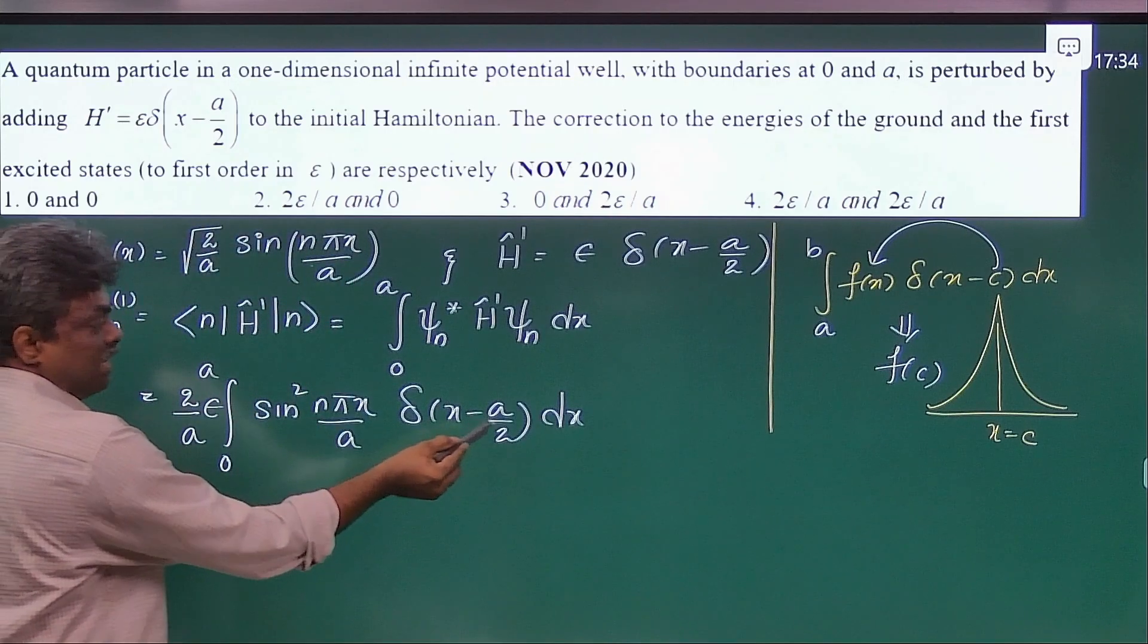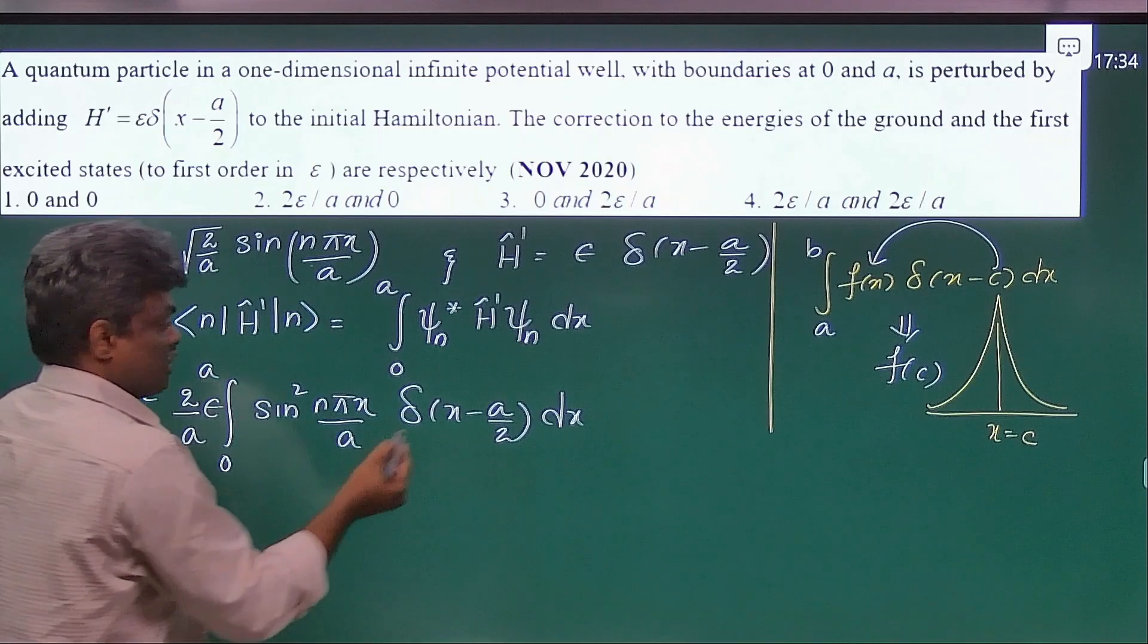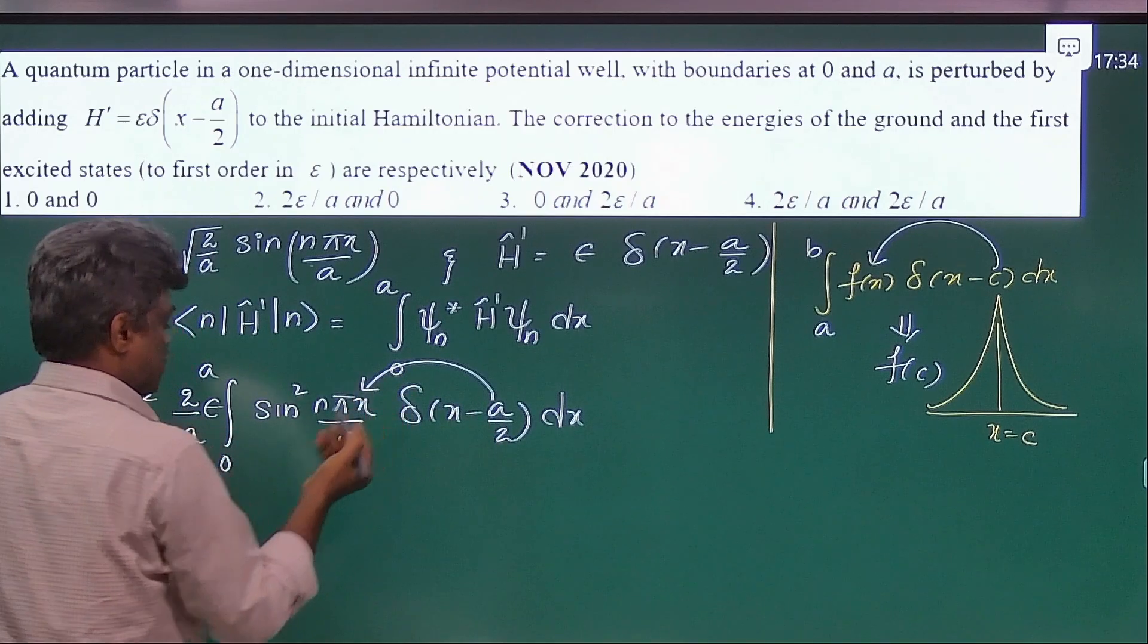In the same way here, the center is a by 2, which lies in between 0 and a. So that's why, take this a by 2 and substitute here.